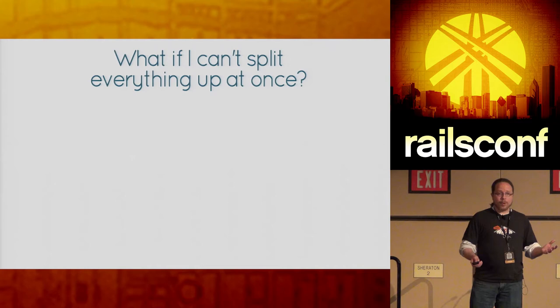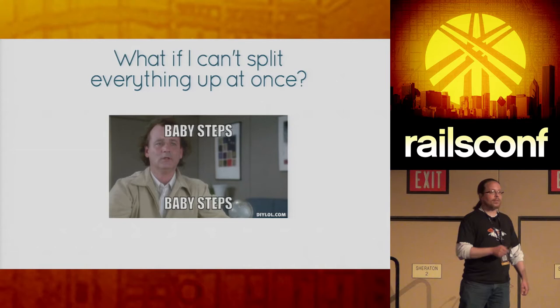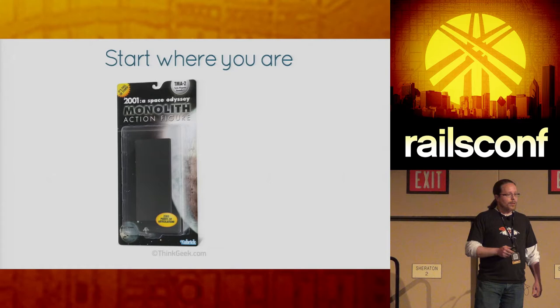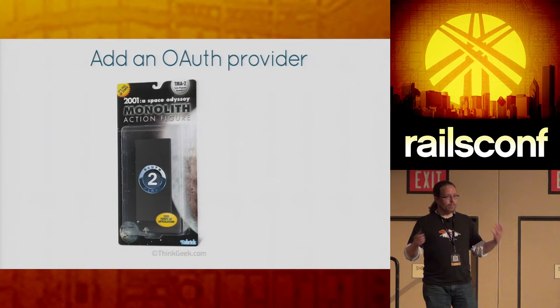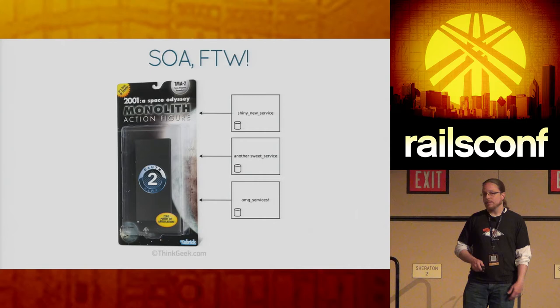You're probably thinking, this is great if you can do a total rewrite or start with a fresh app, but what do I do with my monolith? That's OK — we can take baby steps to get to a better place. You can start where you are, even if that's a monolith. You can plug OAuth 2 provider functionality into your monolith and then start plugging in other services that work alongside that app.